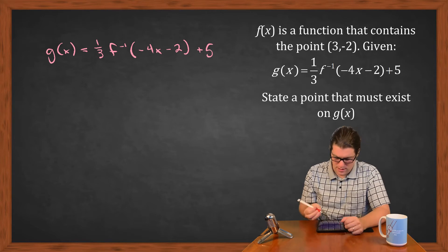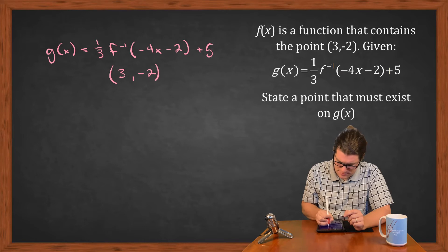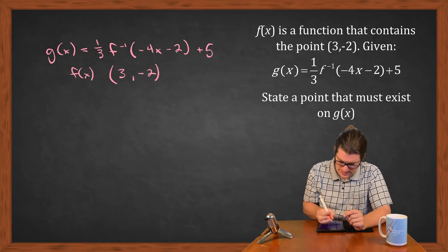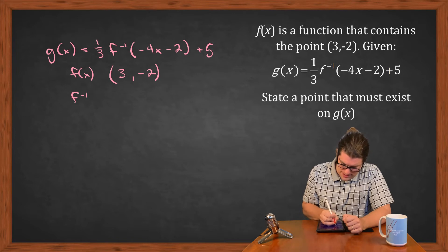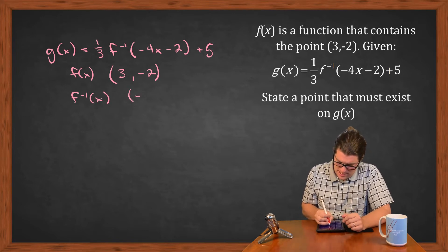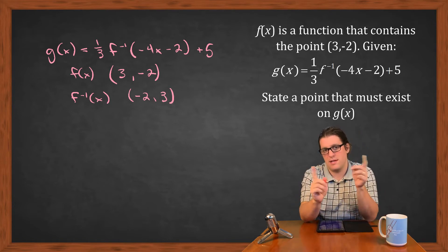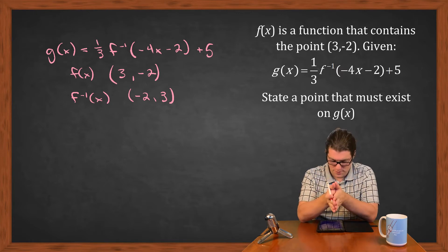Now the original point that we have on f(x) is (3, -2). So f(x) contains that. What that means is that right away we can say that f inverse is going to contain (-2, 3) because it would just be the x and the y values switched. So f inverse must contain that.